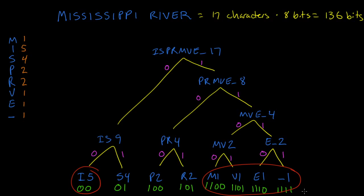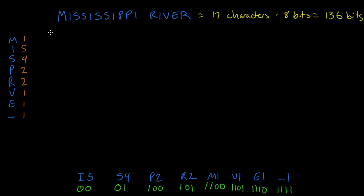We don't need this tree anymore. All we need are the letters and the bit representations. Now we can write out the bits for our message. Start with M. M is one, one, zero, zero. I is zero, zero. Zero, zero, zero, one for S, zero, one for S, zero, zero for I. P is one, zero, zero, one, zero, zero again, zero, zero for the I. Space is one, one, one, one. Keep doing this for the rest of the message. And there's our Huffman-coded binary message for Mississippi River.